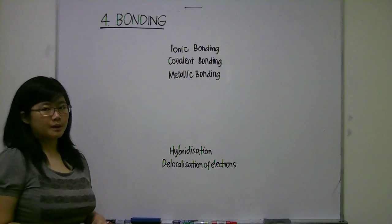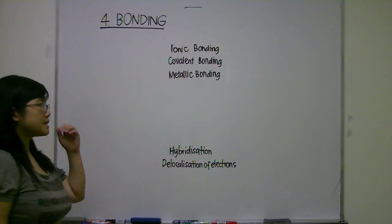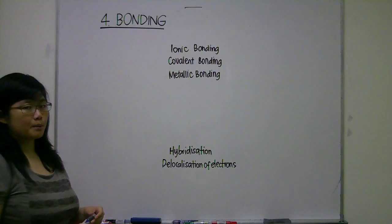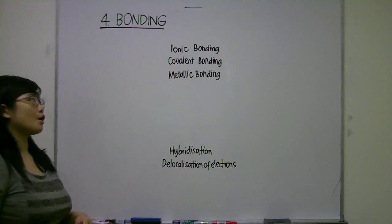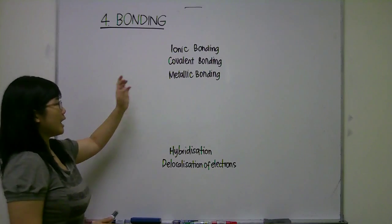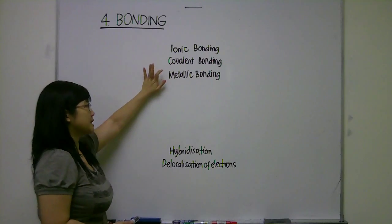Bonding is the fourth chapter in IB chemistry. Here we'll be discussing the different types of bonds present in molecules or compounds, mainly ionic bonding, covalent bonding, and metallic bonding.